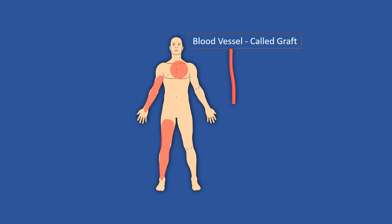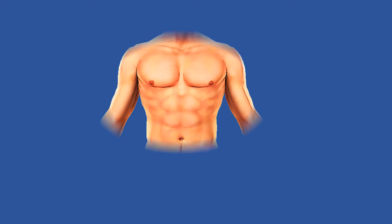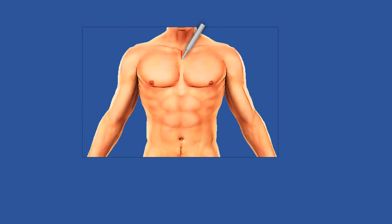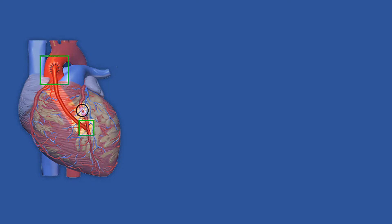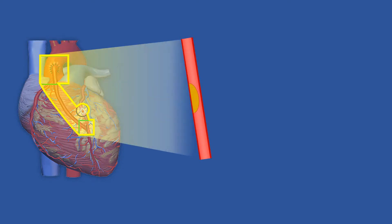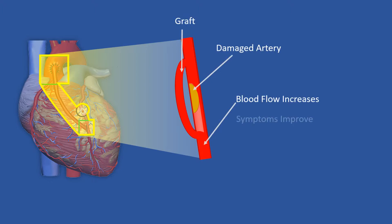Your doctor prepares the graft first. During the surgery, your doctor makes an incision in your chest and cuts the breast bone to reach the heart. The blood vessel is then attached above and below the narrowed or blocked area of the coronary artery. In this way, the blood flow to the heart increases, symptoms are improved, and the risk of heart attack decreases.